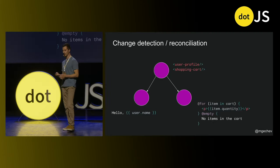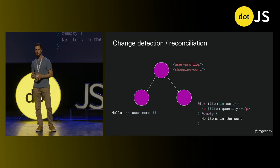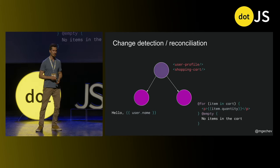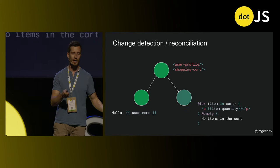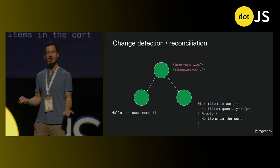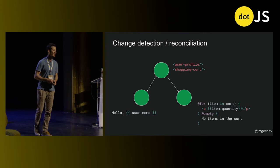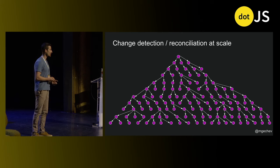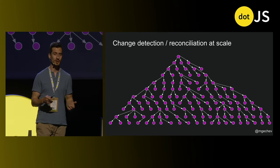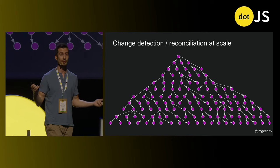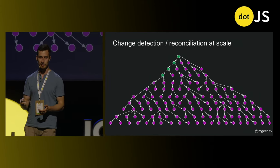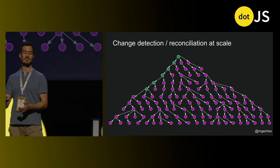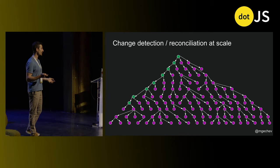For the simple example with a small component tree of only three components, it doesn't seem like a big deal to traverse them. Whether we traverse one or three, it's going to be pretty fast. But real-life applications are different — they have hundreds or thousands of components alive the whole time. If we have to traverse these component trees component by component to find differences and reflect them in the view, it's going to take a lot of time.